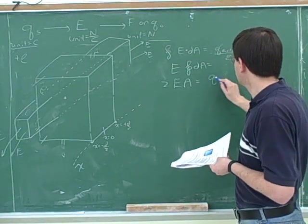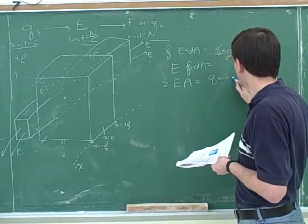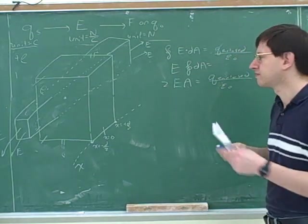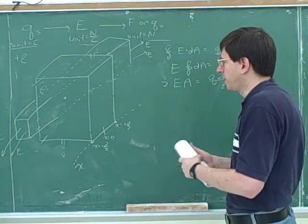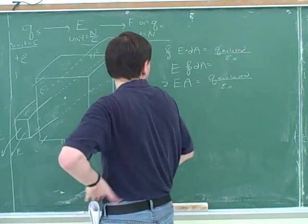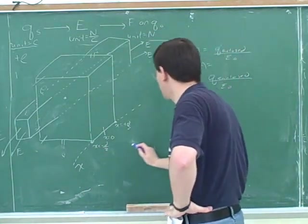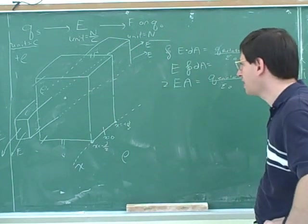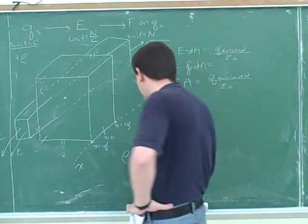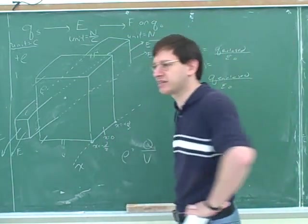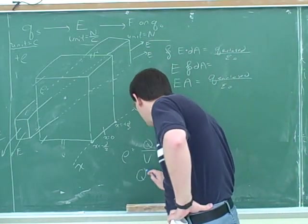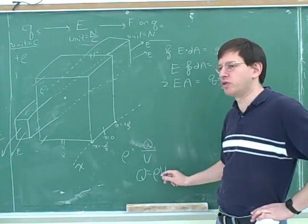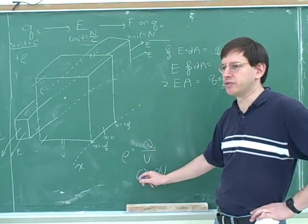Now we need to figure out what the Q enclosed is going to be. We have to figure out — so what we were given here was rho. And remember that our formula for rho is like this. So if we just knew what volume was enclosed, we could figure out the charge that was enclosed.